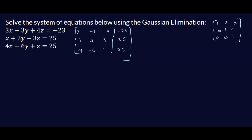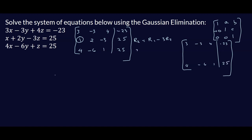To eliminate the entry in row 2, column 1, apply: row 2 = row 1 minus 3 times row 2. Row 1 is 3, negative 3, 4, negative 23. Minus 3 times row 2 is negative 3, negative 6, 9, negative 75. Adding gives row 2: 0, negative 9, 13, negative 98. Rows 1 and 3 are unchanged.